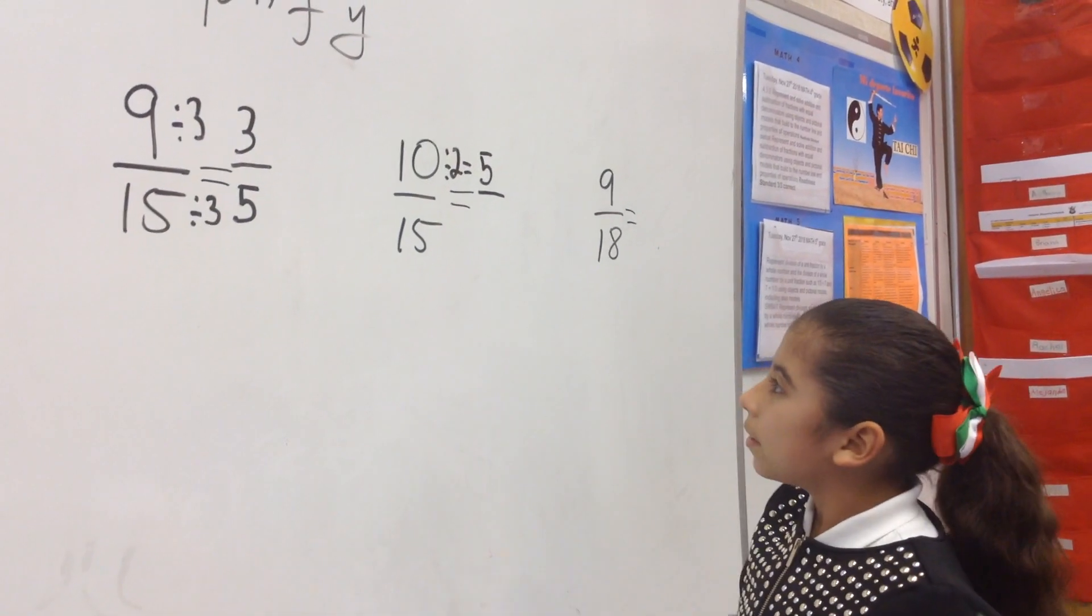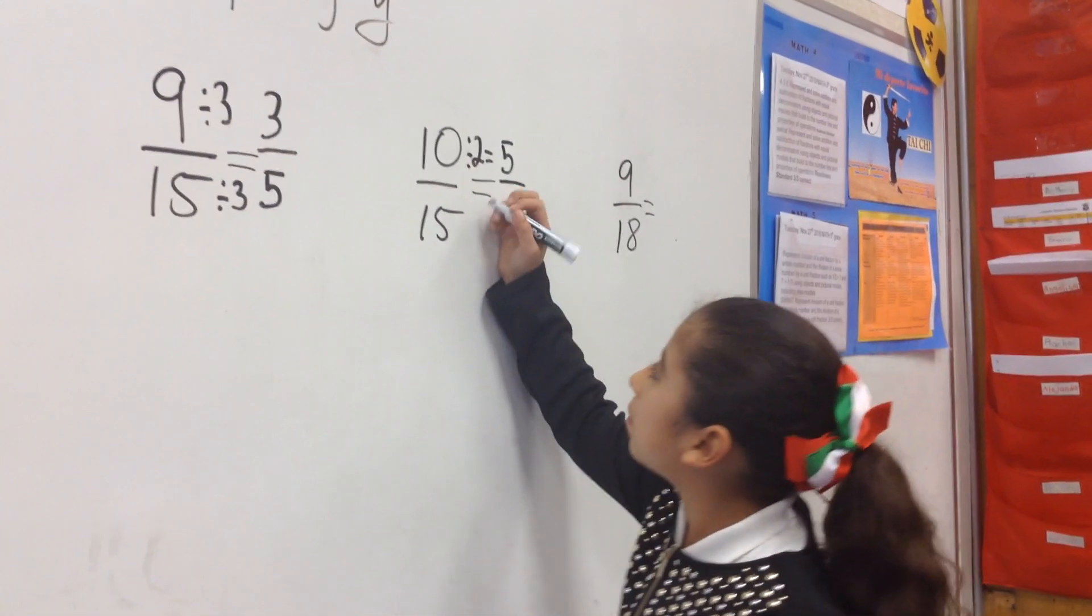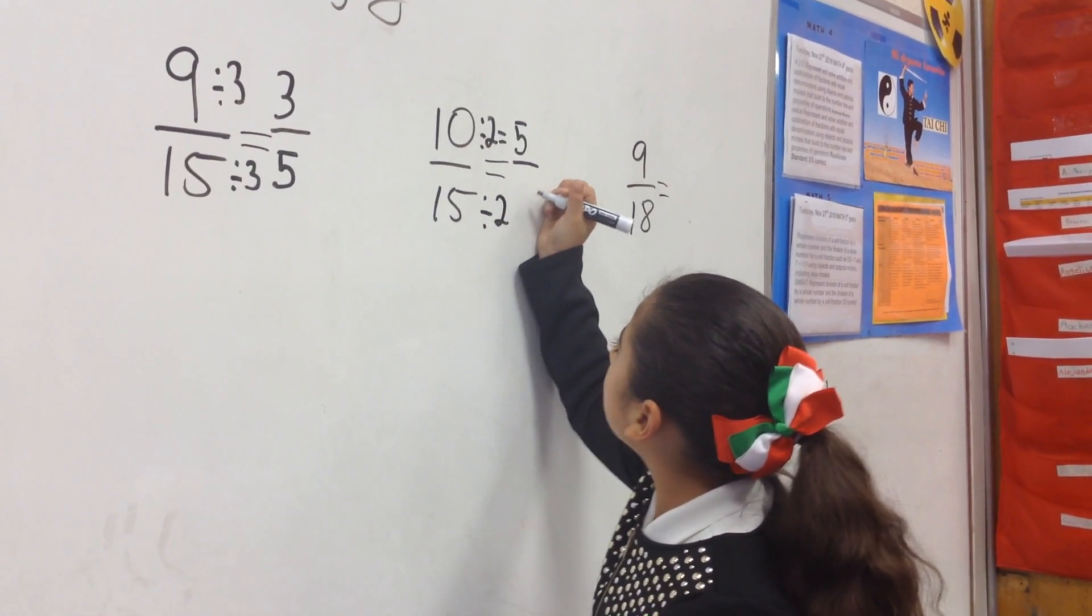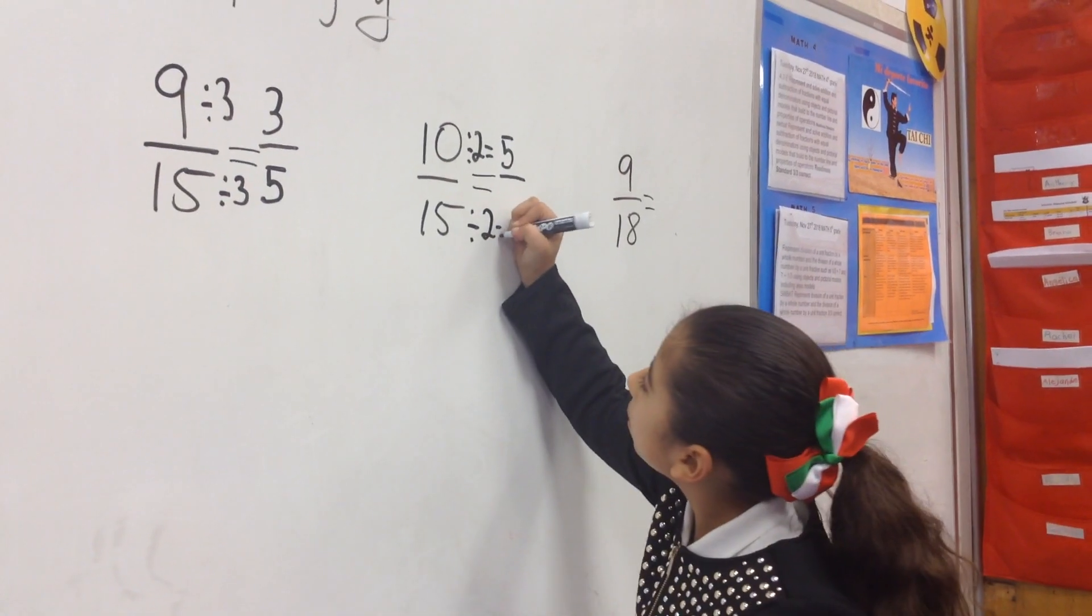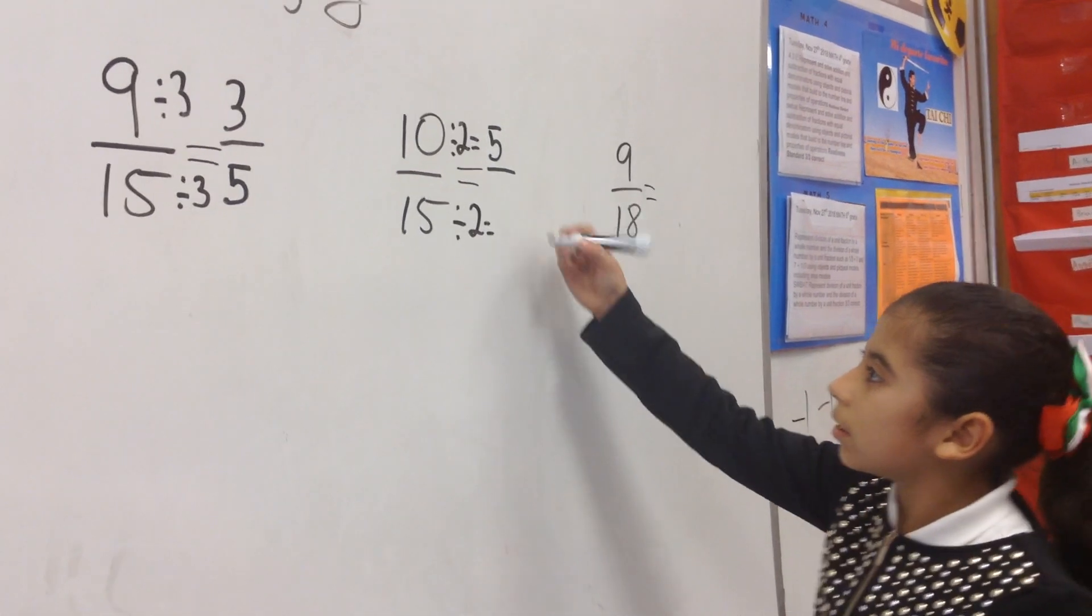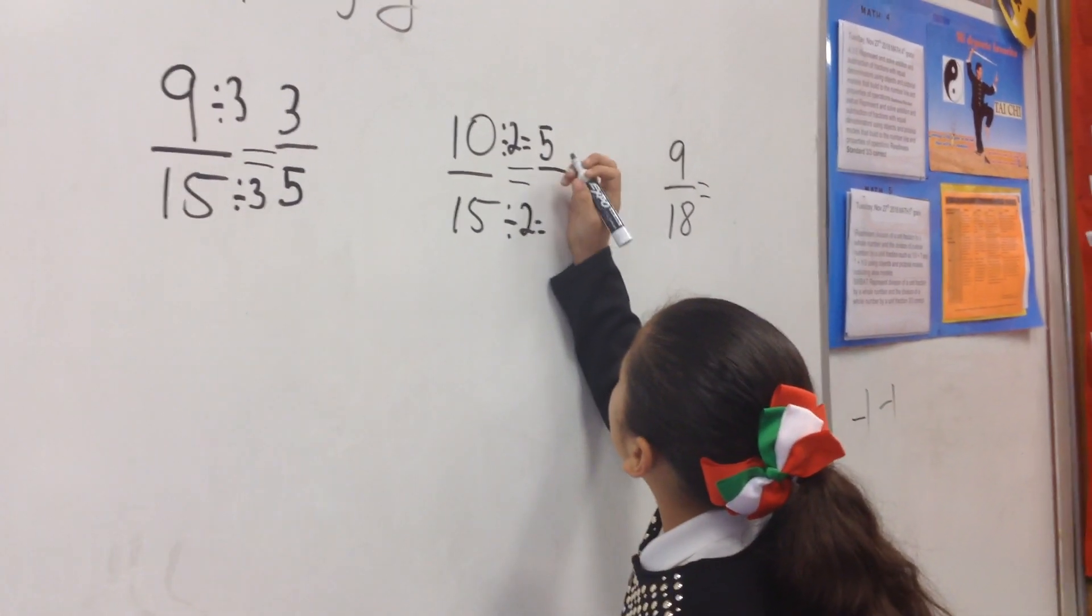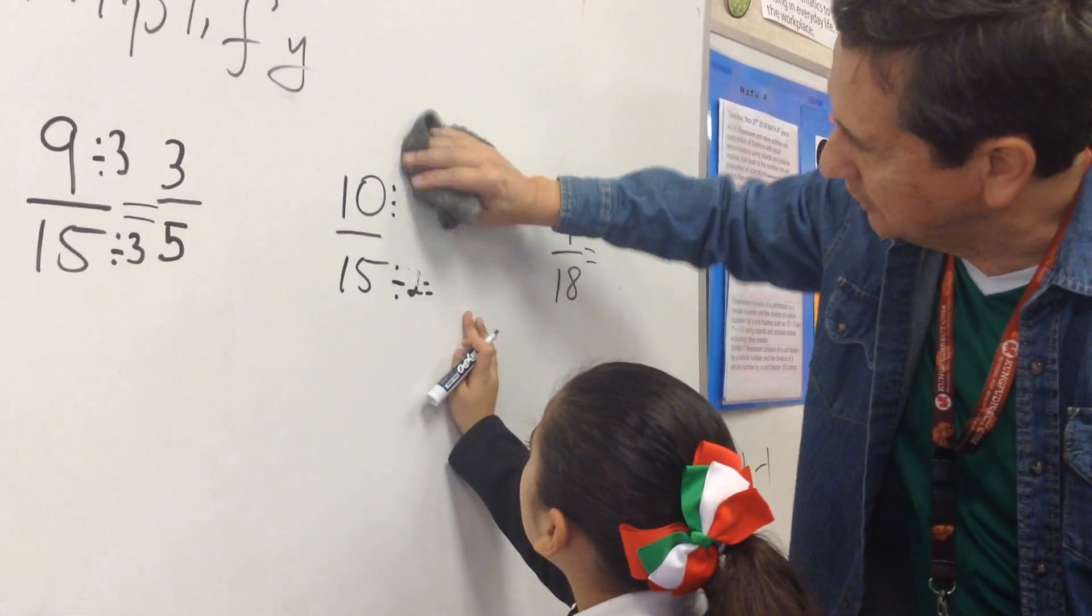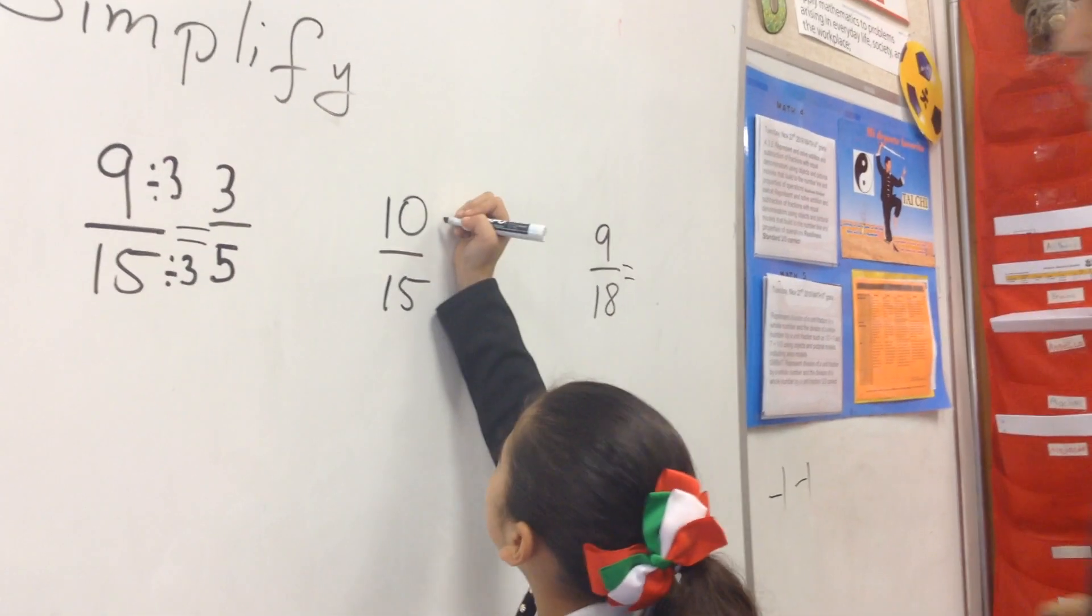Then 15 divided by 2 equals... No, this is wrong. You don't have to divide by 2 because you cannot divide an odd number by 2. Try a different one.